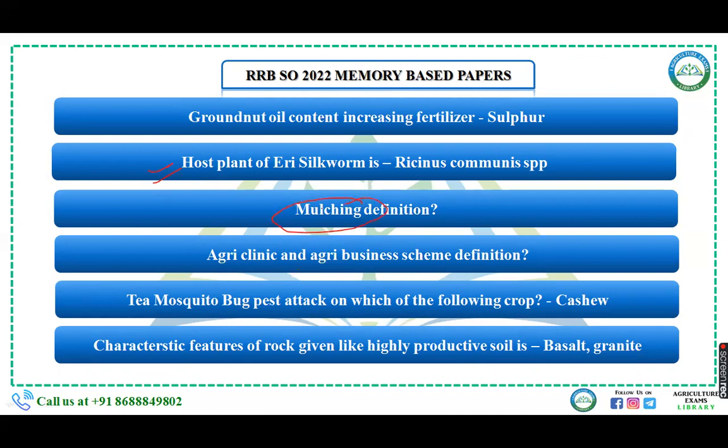They also asked regarding the definition of mulching: the plant residue or residue of previous crops after harvest that is left on the ground to conserve soil moisture is called mulching. One question was on the Agri-Clinic and Agri-Business (ABC) scheme, implemented by the Ministry of Agriculture and Farmer Welfare, Government of India, to supplement public extension services and create self-employment opportunities for unemployed agriculture graduates, diploma holders, and biological science graduates.